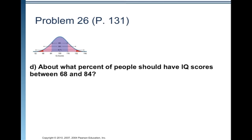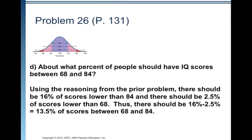About what percent of people should have IQ scores between 68 and 84? So that's this little area over here. It's not quite the whole tail below 84, but it is part of the tail below 84. Using the reasoning from the prior problem, there should be 16 percent of the scores lower than 84.